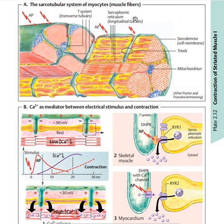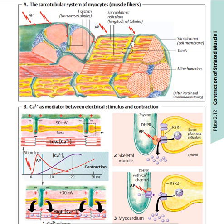For an action potential to occur in the myocyte, you first need to know the triad that occurs in this system. There is going to be a triad of one membrane of the cell, which is called the sarcolemma, and two sarcoplasmic reticula.